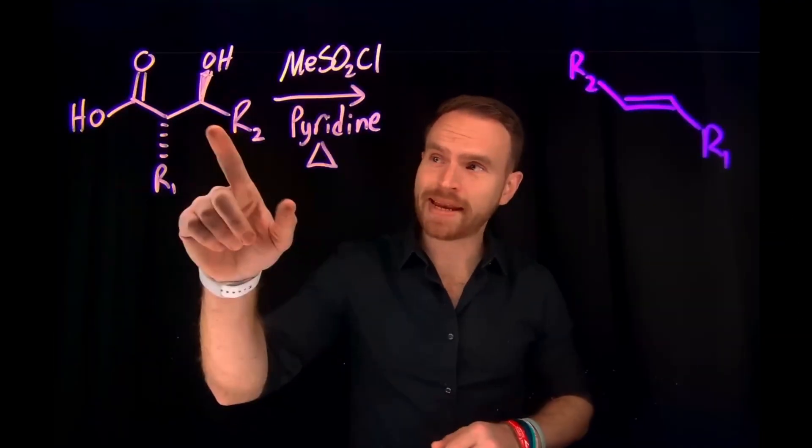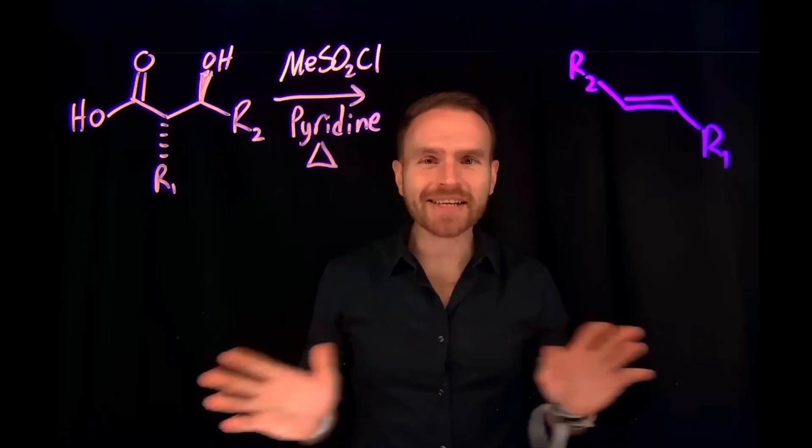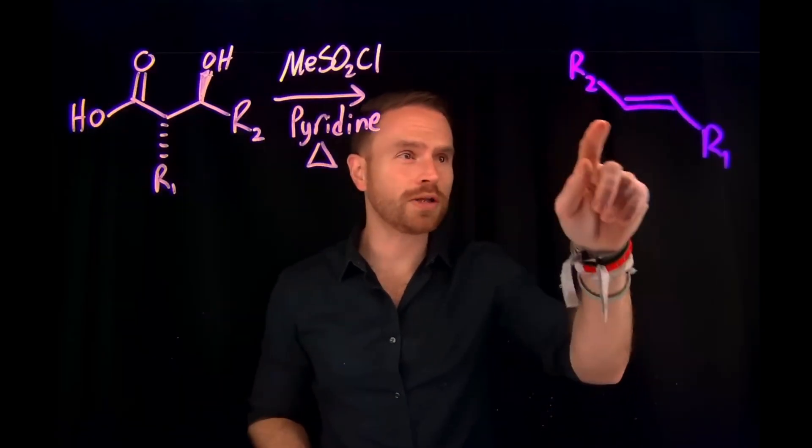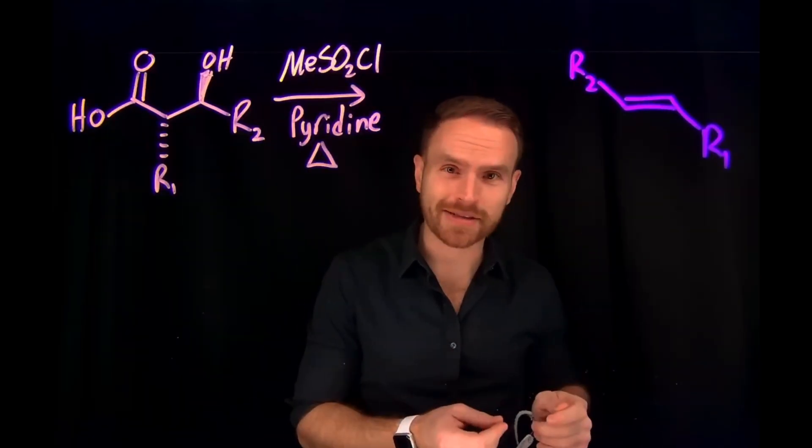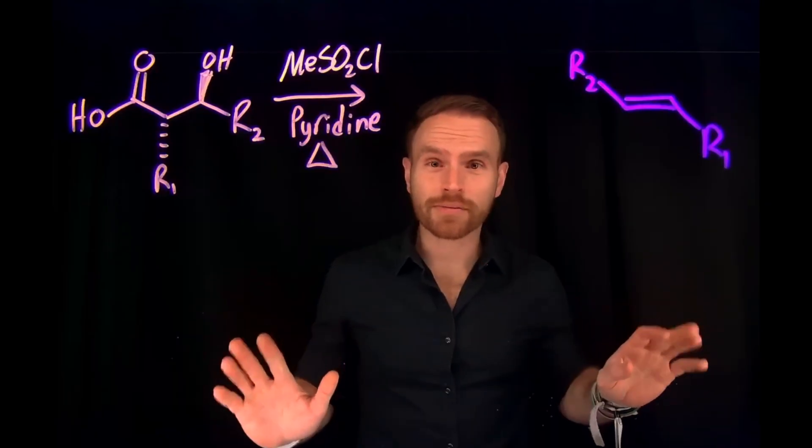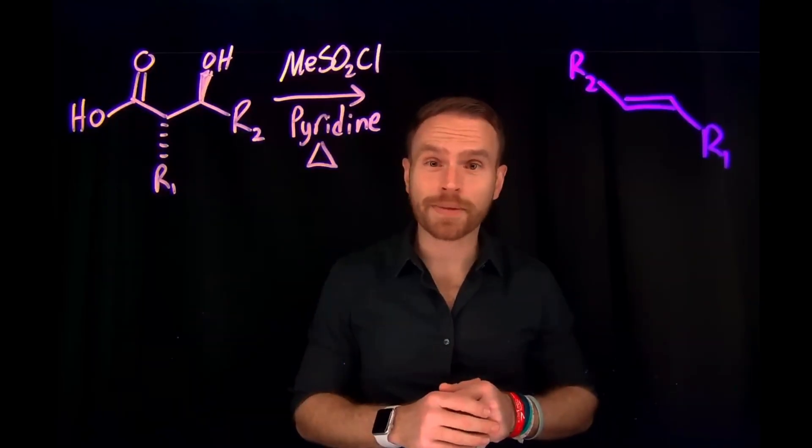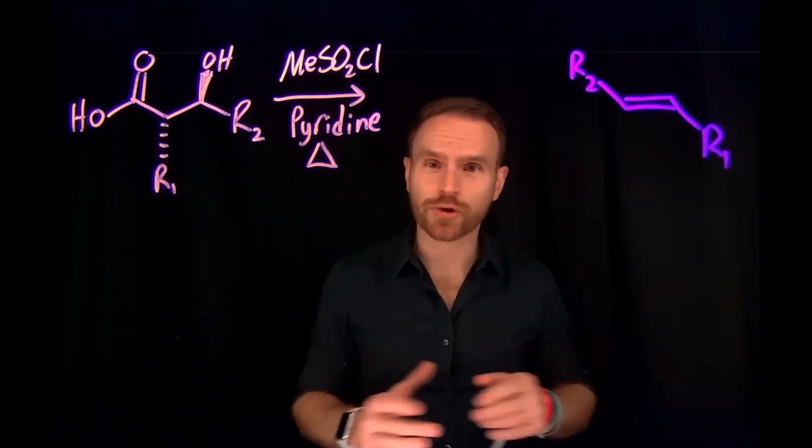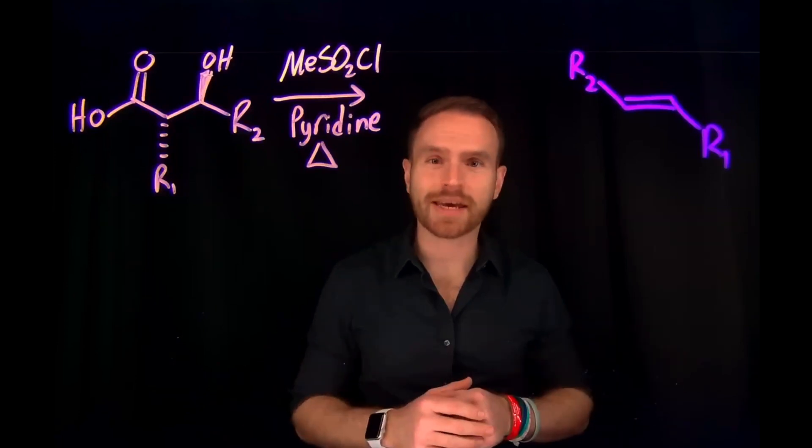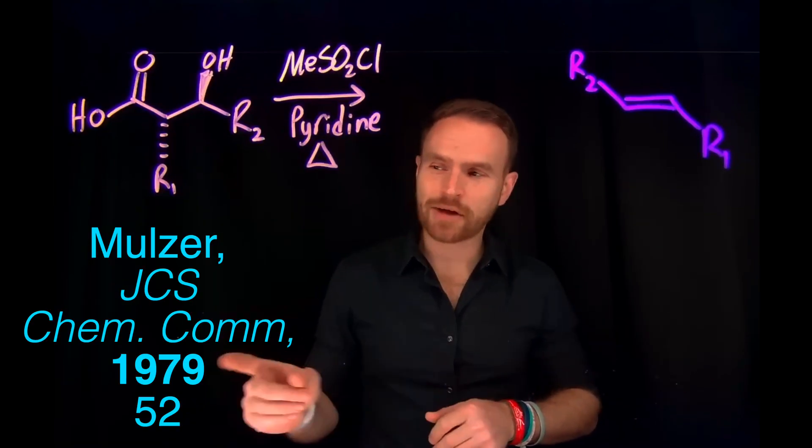It turns out that beta-hydroxy acids are actually excellent precursors to generating 1,2-disubstituted trans alkenes. In fact, they've been using it for forever. This publication comes from 1979, published by Moser and co-workers in what was effectively Chemical Communications. You can check out the reference right here.